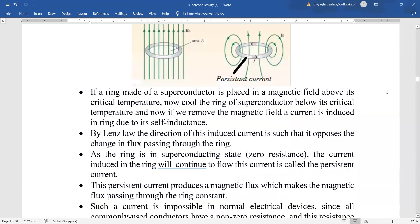If a ring made of superconductors is placed in the magnetic field above its critical temperature, then when the ring has been cooled below its critical temperature and if we remove the magnetic field, current will immediately get induced in the ring due to the property of self-inductance and from Lenz law which states that induced EMF is equal to rate of change of flux. E is minus del phi by del T. The direction of this induced current is such that it is opposing the very cause that produces it.